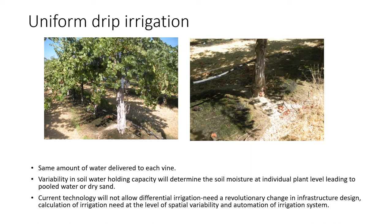Instead of using continuous irrigation where the whole hose is under the same pressure and every plant sees the same amount of water, you can separate it into individual segments so each plant is controlled individually, changing the total amount of water from one place to another. This allows adjustment of water down to a single crop level.